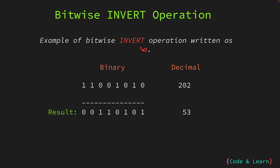The invert operation is written as the caret sign followed by the number or variable A. Let's examine the operation on each bit of A. The leftmost bit, or most significant bit, is set to 1 — after the invert operation it becomes 0. Next we have 1, it becomes 0. Next we have 0, it becomes 1. Then 0 becomes 1, 1 becomes 0, 0 becomes 1, 1 becomes 0. So after applying the invert operation on the binary number A, which was 11001010, we get the resultant binary number 00110101, or decimal 53.